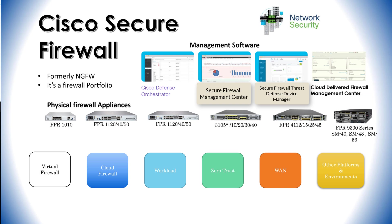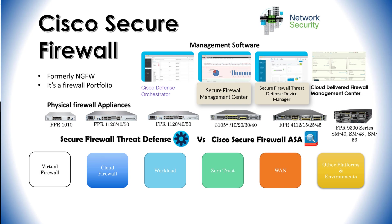There are two firewall software platforms — FTD and ASA — that the hardware supports, and they have also had name changes. ASA, which stands for Adaptive Security Appliance, is now called Secure Firewall ASA or Secure Firewall Adaptive Security Appliance. FTD, which stands for Firepower Threat Defense, is now called Secure Firewall Threat Defense. ASA is Cisco's older firewall software, which has been around for many years supporting large and small networks all over the world.